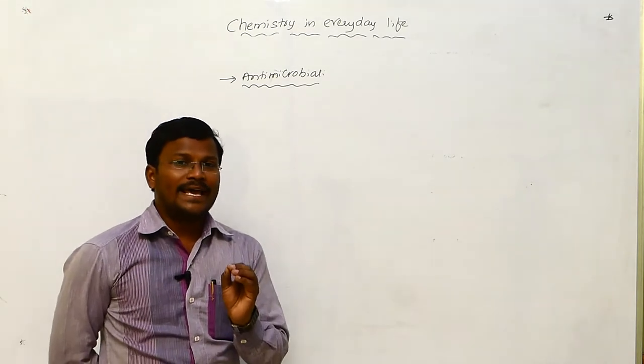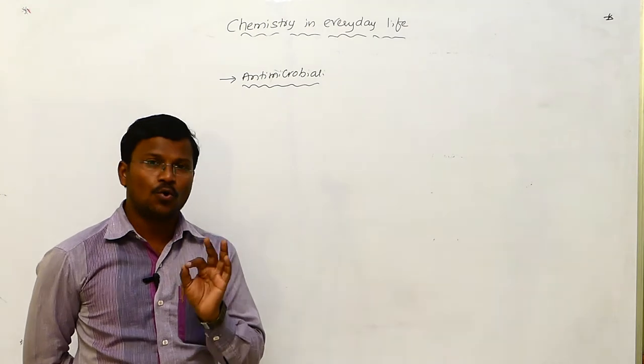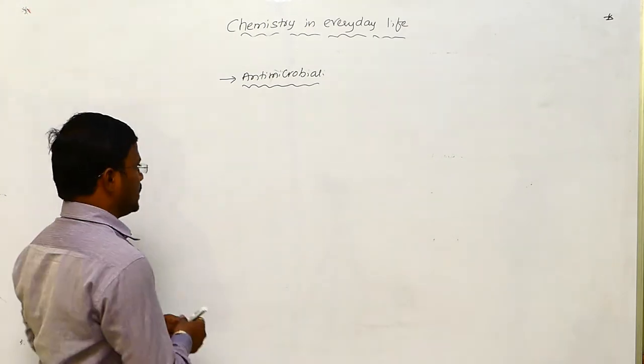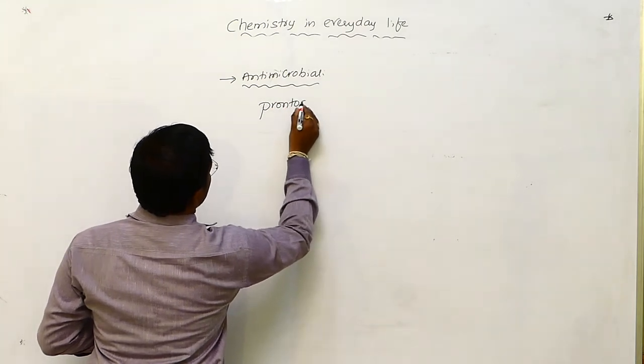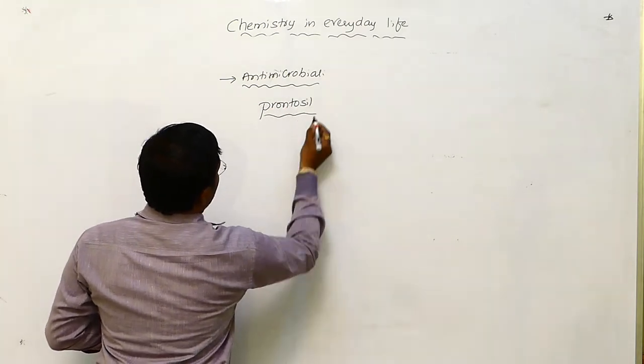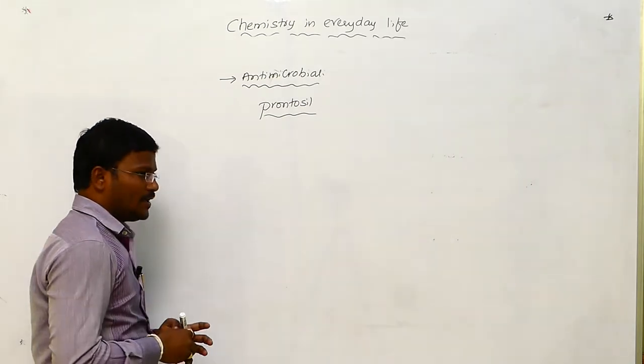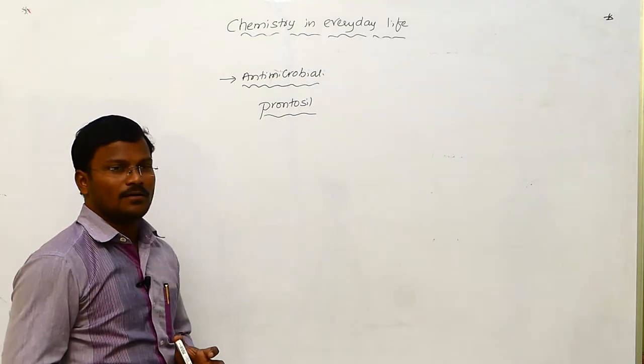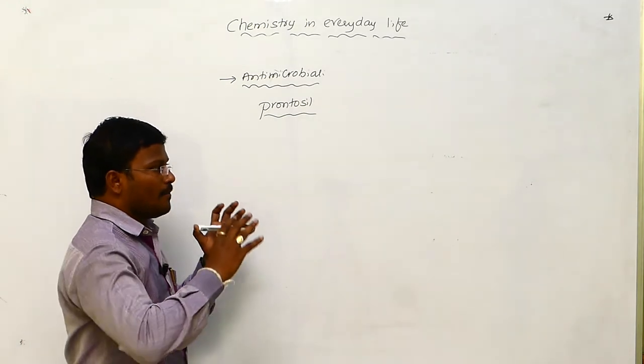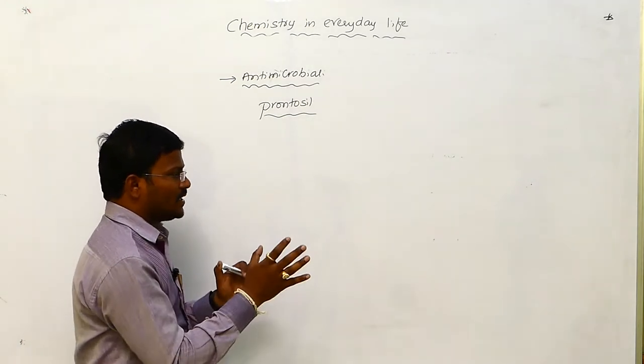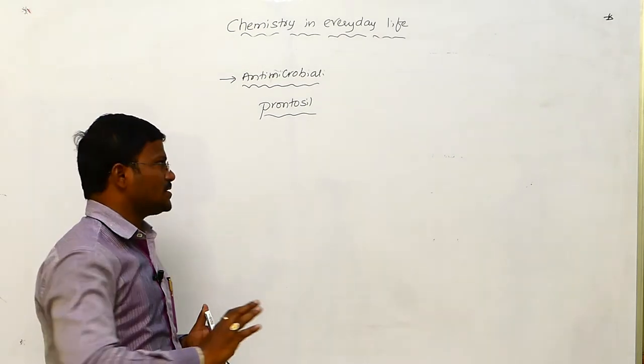Paul Ehrlich is the scientist who discovered Prontosil. Actually, Prontosil was first identified as having antibacterial activity by Domac Gerhard.